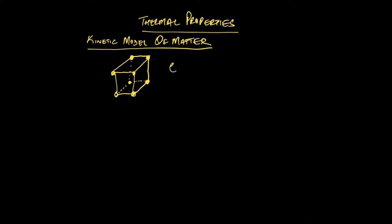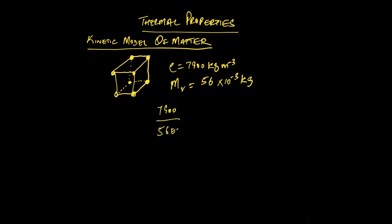You know that the density of iron is 7,900 kilograms per cubic meter, and the molar mass of iron is 56 grams, or 56 times 10 to the negative 3 kilograms. From this, we can calculate the amount of moles in one cubic meter: it's 7,900 divided by 56 times 10 to the minus 3, which is 1.4 times 10 to the 5 moles.